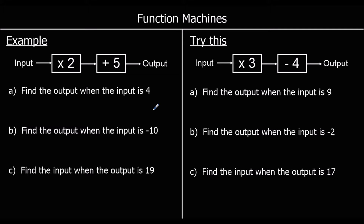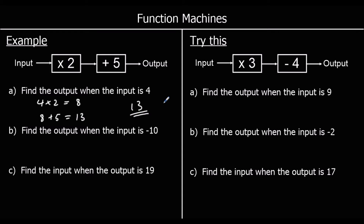The first question says find the output when the input is 4. So we're going to put 4 into the machine. We're going to multiply it by 2. 4 times 2 is 8. Then we're going to add 5. 8 plus 5 is 13. So the output is 13.